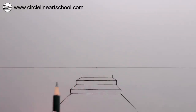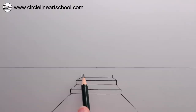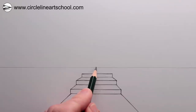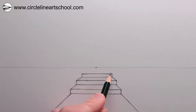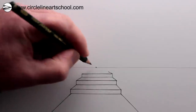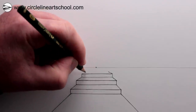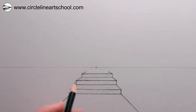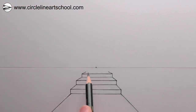Again we could repeat this several times. Each time the steps are getting further away from us, the vertical line of each step needs to be a little bit shorter, because things are getting smaller as they go towards the vanishing point. All of the receding lines need to go towards the vanishing point and the horizontal lines stay horizontal.